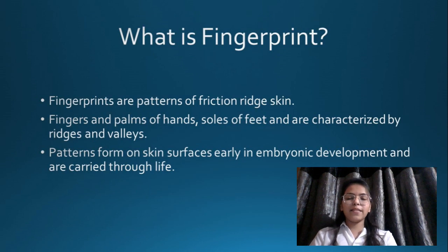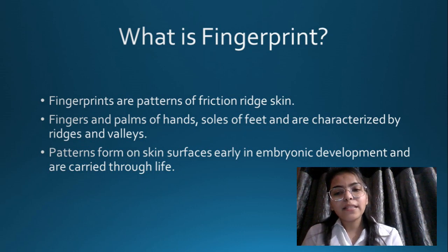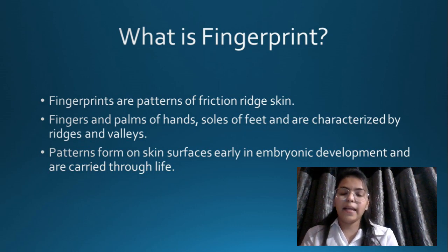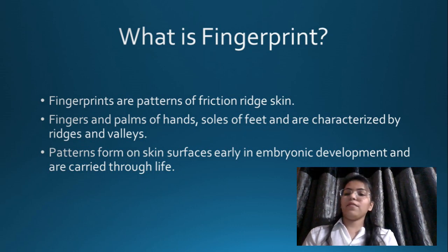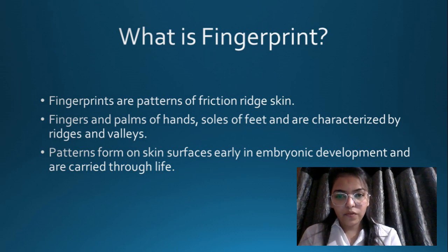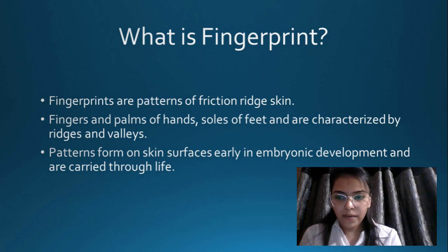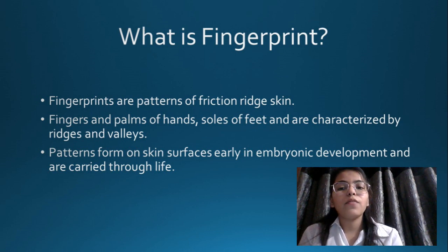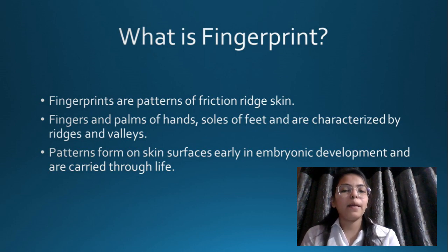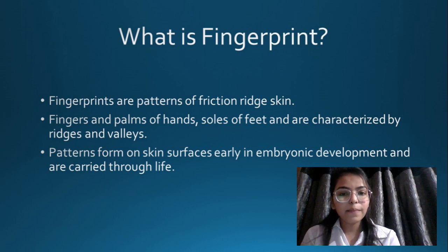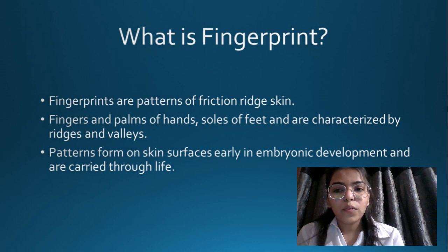What is a fingerprint? Fingerprints are patterns of friction ridge skin found on fingers and palms of hands and soles of feet, characterized by ridges and valleys. These patterns form on the skin surface early in embryonic development and are carried through life.